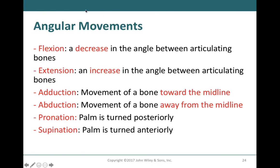Angular movements are the group that will contain the most types of movements we're going to learn. Remember, angular movements refer to any movement that increases or decreases the angle between articulating bones. We have flexion, extension, adduction, and abduction. Most angular movements will have an opposite movement grouped with them, and each of them will oppose one another.